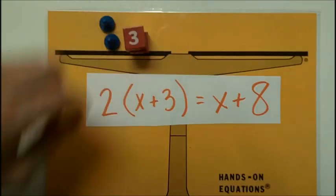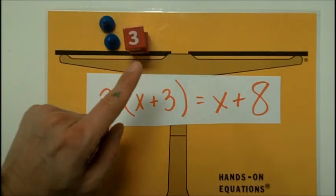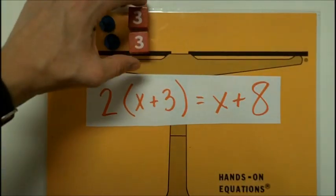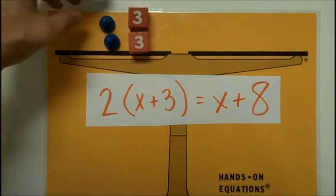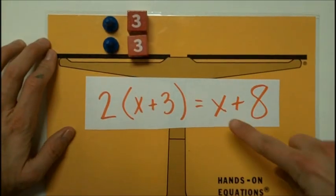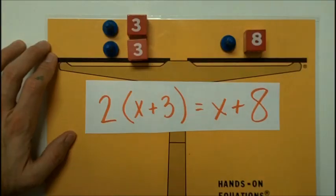I don't mean stacked on top of each other like this, so that it's a tall tower, but laying one above each other on the mat. Then on the opposite side, it is x plus 8.